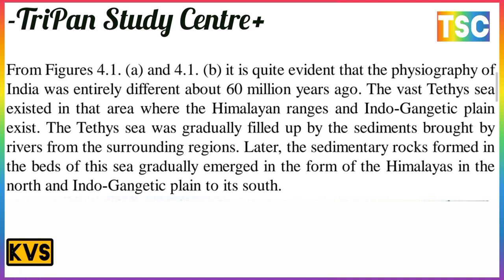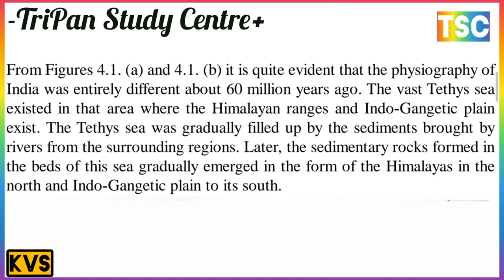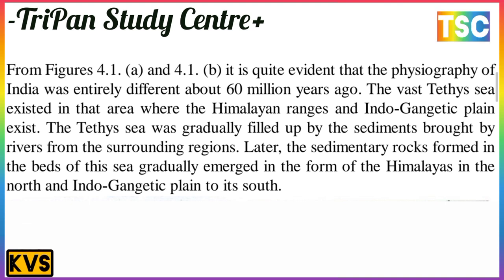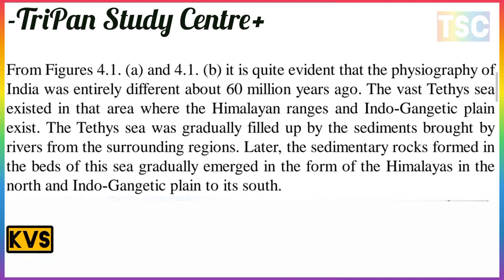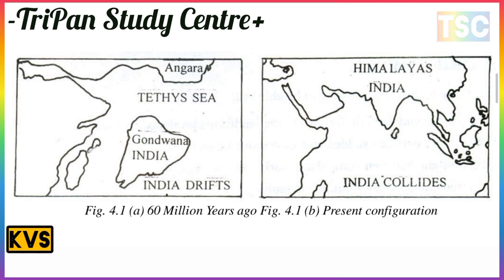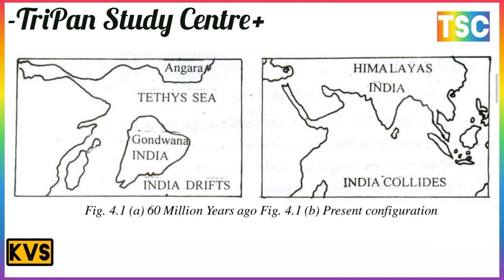It is quite evident that the physical geography of India was entirely different about 60 million years ago. The vast Tethys Sea existed in the area where the Himalayan range and the Indo-Ganga plains exist today. The Tethys Sea was gradually filled up with sediments brought by rivers from surrounding regions. Later, the sedimentary rocks formed in the bed of this sea gradually emerged in the form of the Himalayas in the north and the Indo-Ganga plains to the south.